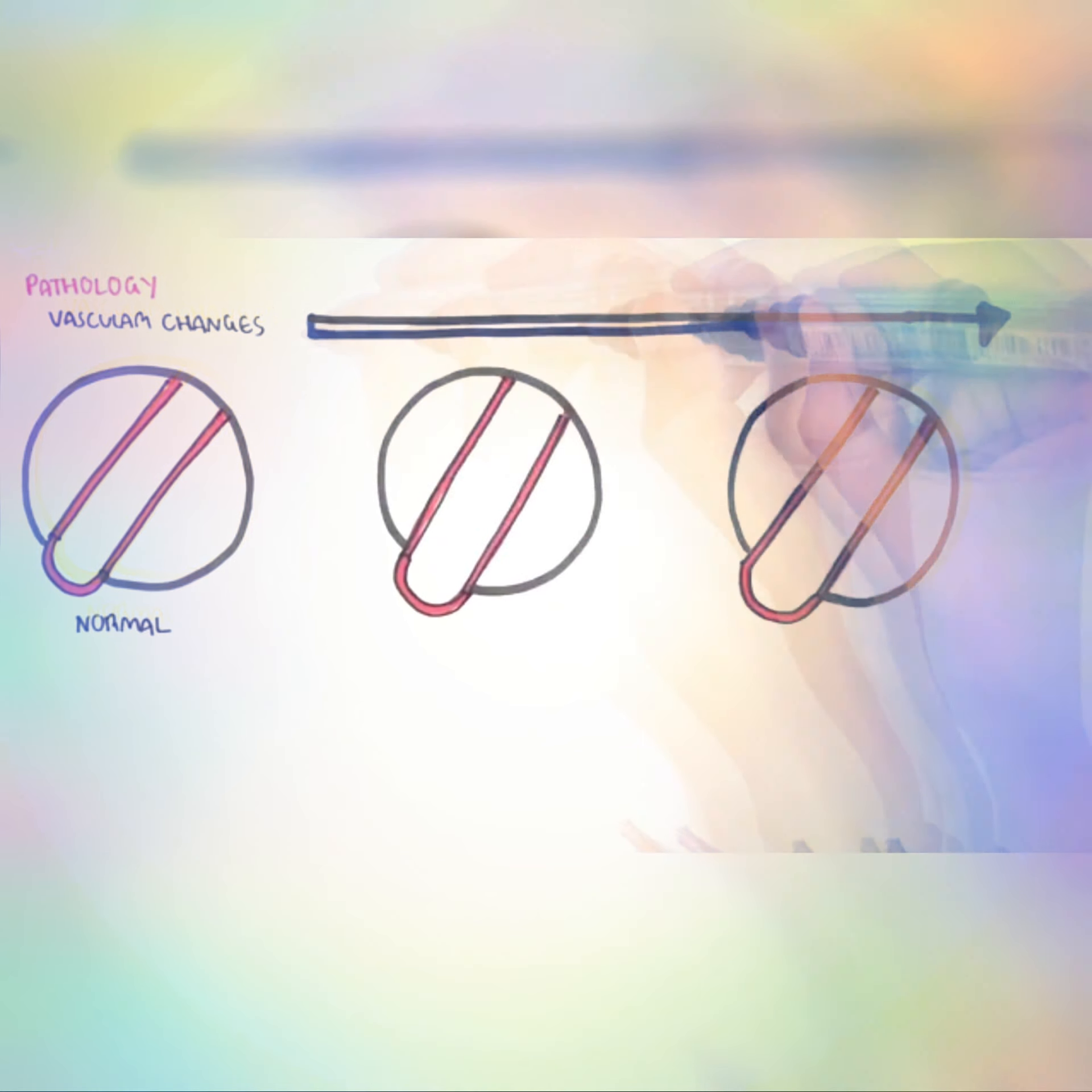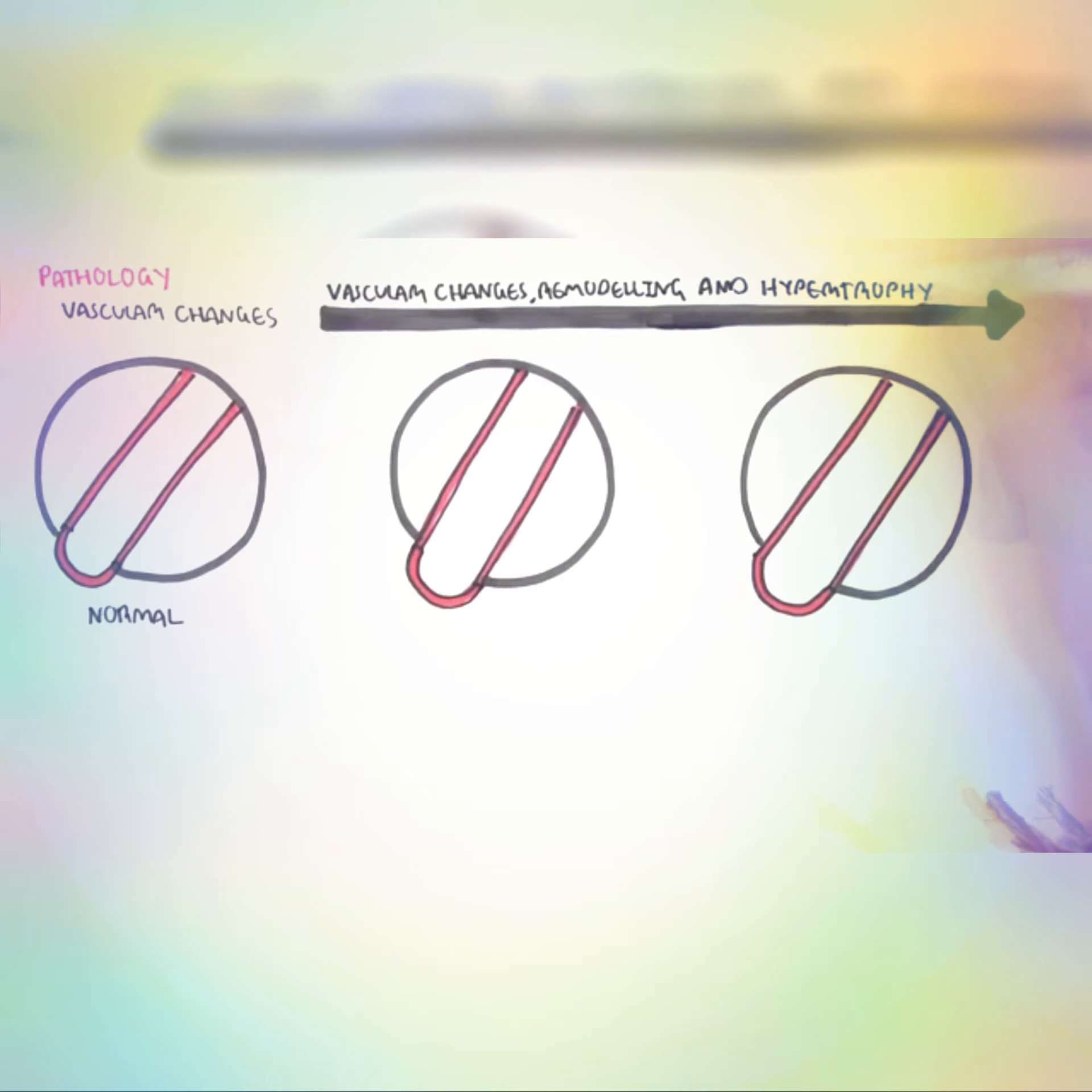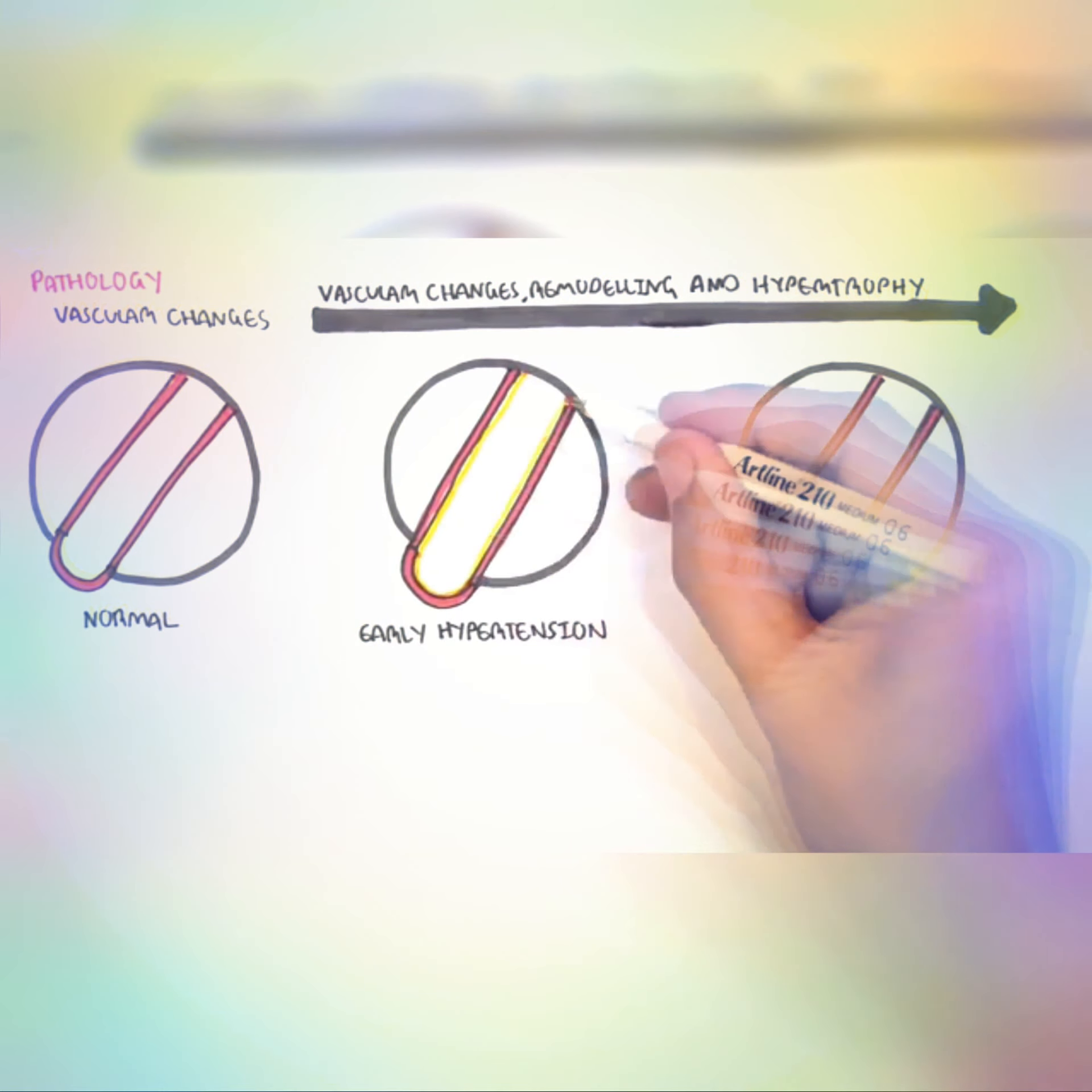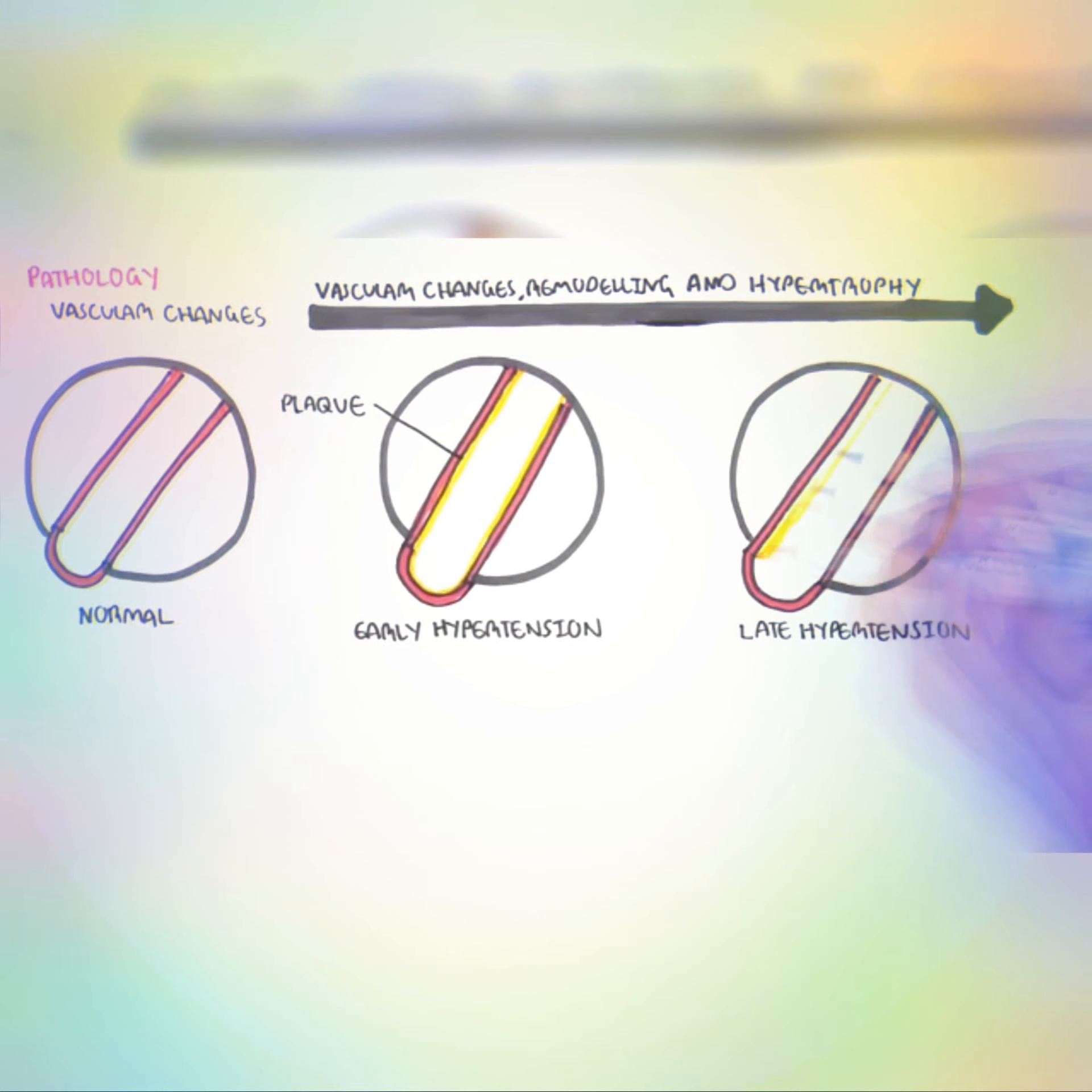The pathological vascular changes that occur in hypertension occur slowly. Normal vessels have good blood flow. However, in hypertension, and as hypertension progresses, there is vascular changes, remodeling and hypertrophy.